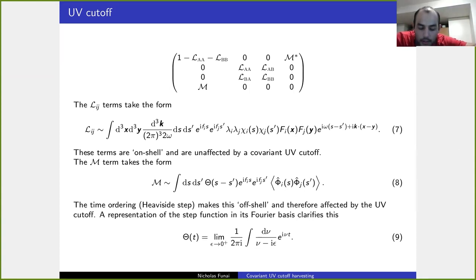Let's look at the reduced density matrix of the two qubits after interaction. So if we look at these term by term, the L_ij terms as given in equation seven involve multiple integrals of X, Y, K momentum, S and S prime, but there's no time ordering involved. So these terms are as a result of first order perturbative expansions squared.